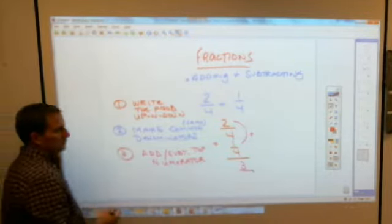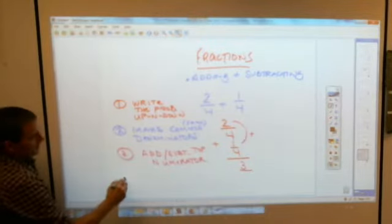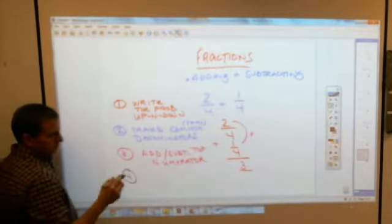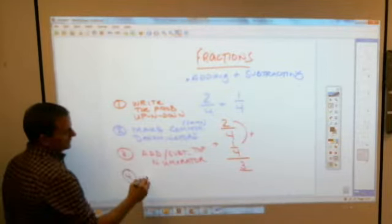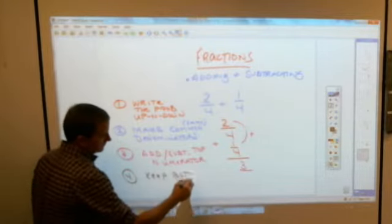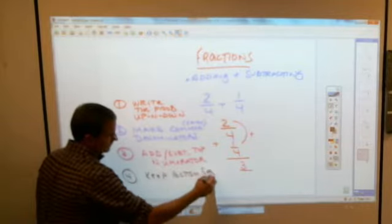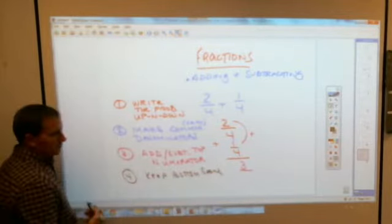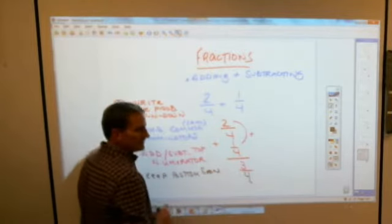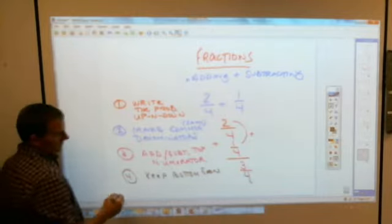And the next step is where people make some common mistakes here. Step number four, Trevor. You do not add the denominator. Keep the denominator the same. Keep the bottom the same, which is our denominator. In other words, when you add two fourths and one fourths, you get three fourths. You don't get three eighths, which would mean you'd end up getting something smaller than it really starts with. Keep the bottom the same.